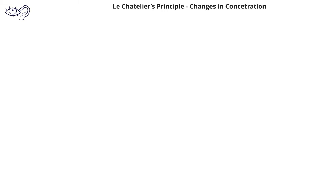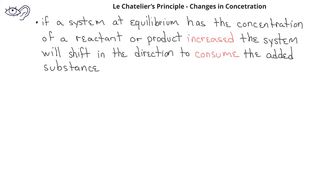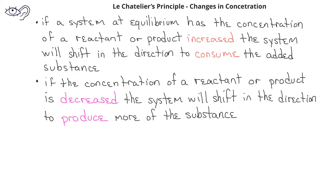Let's look at how Le Chatelier's principle applies when we change the concentration of a reactant or product. If a system is at equilibrium and the concentration of a product is increased, the reaction will shift to consume the added substance. However, if the concentration of a reactant or product is decreased, the system will shift in the direction that will produce more of the substance that was removed.